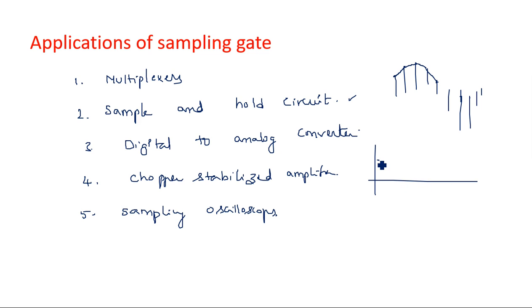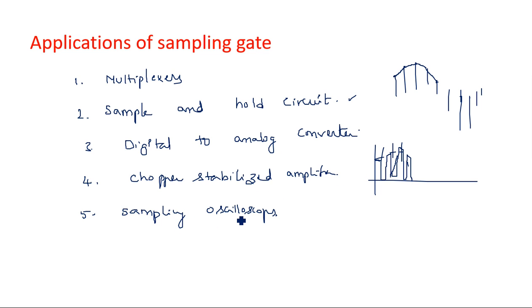The difference between sample and hold and chopper stabilized amplifier is that in sample and hold, the input signal is sampled and the capacitor slowly charges to the next level, whereas in the chopper stabilized amplifier the input signal is cut into small intervals. In the sampling oscilloscope, the sample of the input signal is transmitted to the output from the input. These are the various applications of sampling gates, and that concludes the six diode sampling gate explanation.